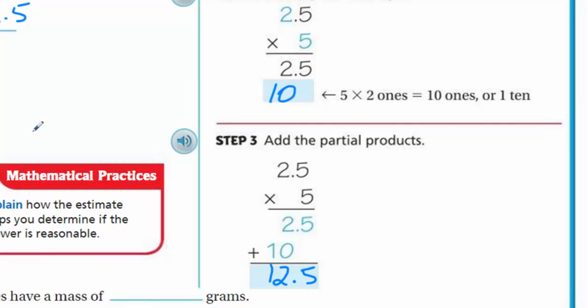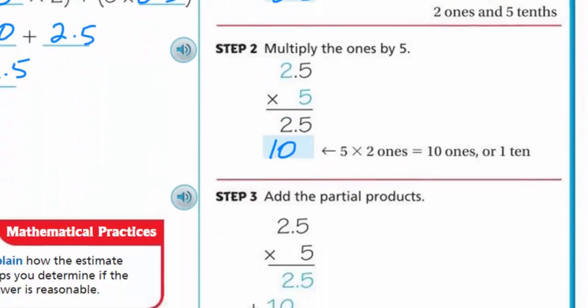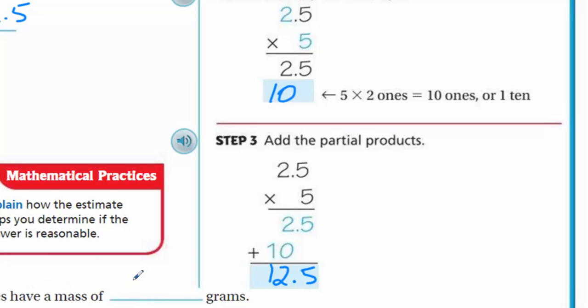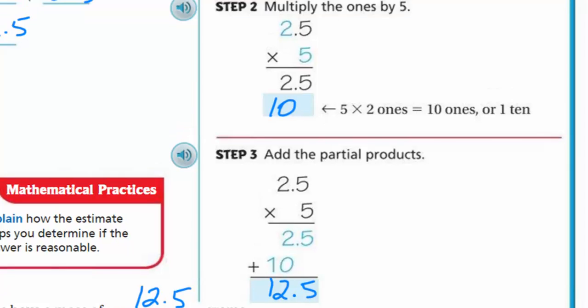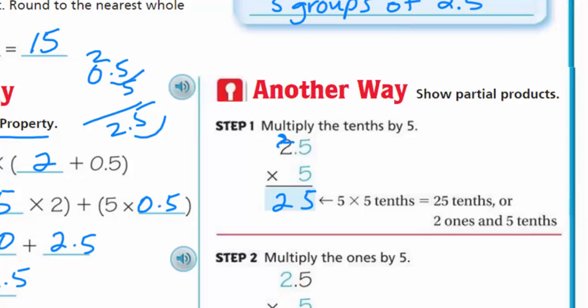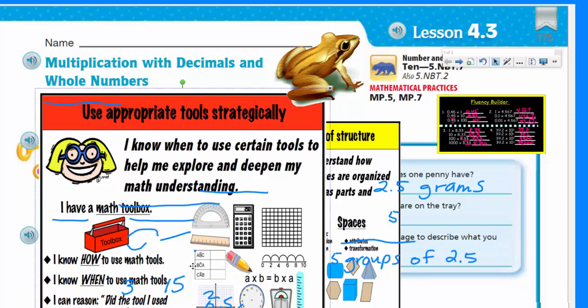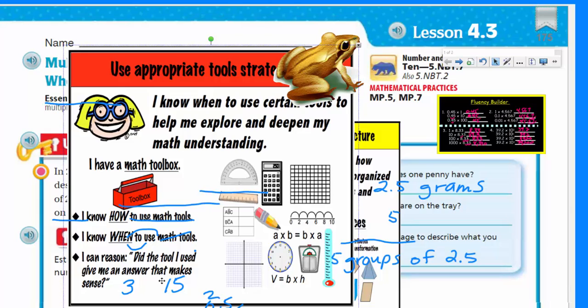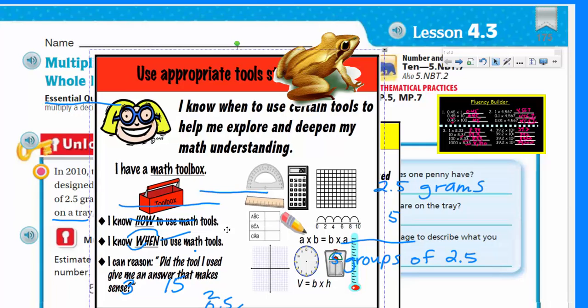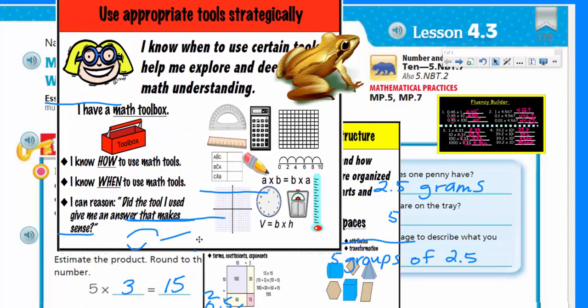So math talk, explain how the estimate helps you determine if the answer is reasonable. We kind of talked about it a little bit. It's 12.5. We were looking at that was 15. Yeah. It's pretty reasonable, I would say. So five Lincoln pennies have a mass of, we have that total. That's all we're doing. This is like our statement. We're making our statement. Now this is where, too, a mathematical practice could come into play. Using tools strategically. Let me go ahead and look at this one here. I know when to use certain tools to help me explore. In this case, you know, we could have shown this problem by actually drawing the pennies. And by showing the pennies 2.5 each penny and then show a repeated drawing of that. These mathematical practices are good because there's just eight of them. And with these eight mathematical practices, it gets us thinking, what can I do that's going to help me with that problem?